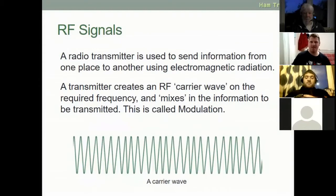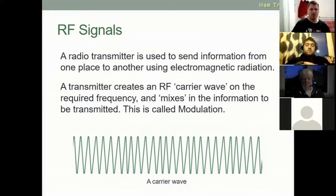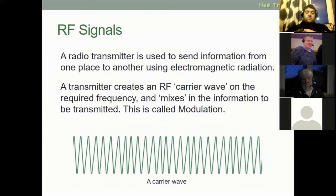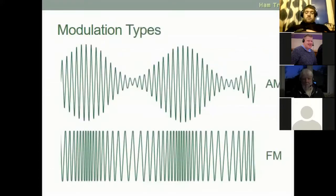We'll start off with RF signals. RF stands for radio frequency. A radio transmitter is used to send information from one place to another using electromagnetic radiation. A transmitter creates an RF carrier wave on the required frequency and mixes in the information to be transmitted — the result of this is modulation. When you press the button on the mic, you transmit a carrier wave, and when you speak into the mic, the radio mixes your audio with the carrier wave, creating a modulated wave.